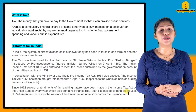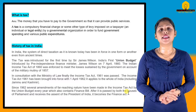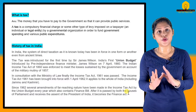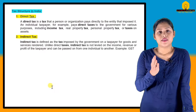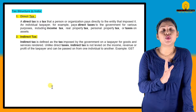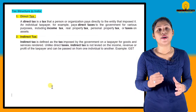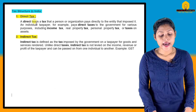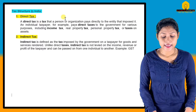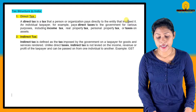The structure of tax in India has two types. One is the direct tax and one is the indirect tax. Direct tax is a tax that a person or organization pays directly to the entity that imposed it — meaning, directly to the government.